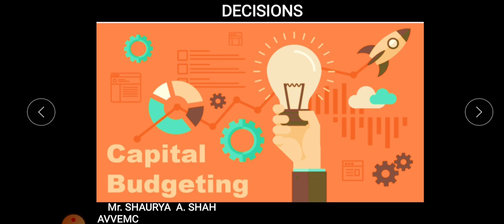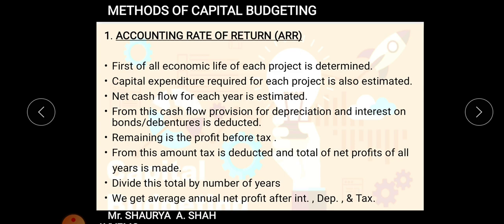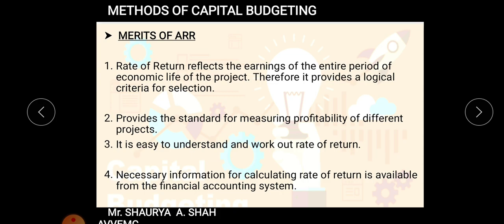In the last lecture we started with the chapter of capital budgeting — we covered the introduction, meaning, characteristics, and the methods of capital budgeting. The very first method we saw was Accounting Rate of Return, commonly known as ARR. There are around five methods of capital budgeting you need to study, calculate sums for, and understand the merits and demerits of.